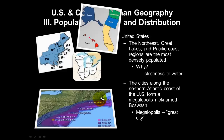The name BosWash comes from the fact that the most northern city is Boston and the most southern city is Washington D.C. Counting them down: Boston, Hartford Connecticut, New York, Philadelphia, Baltimore, Washington D.C.